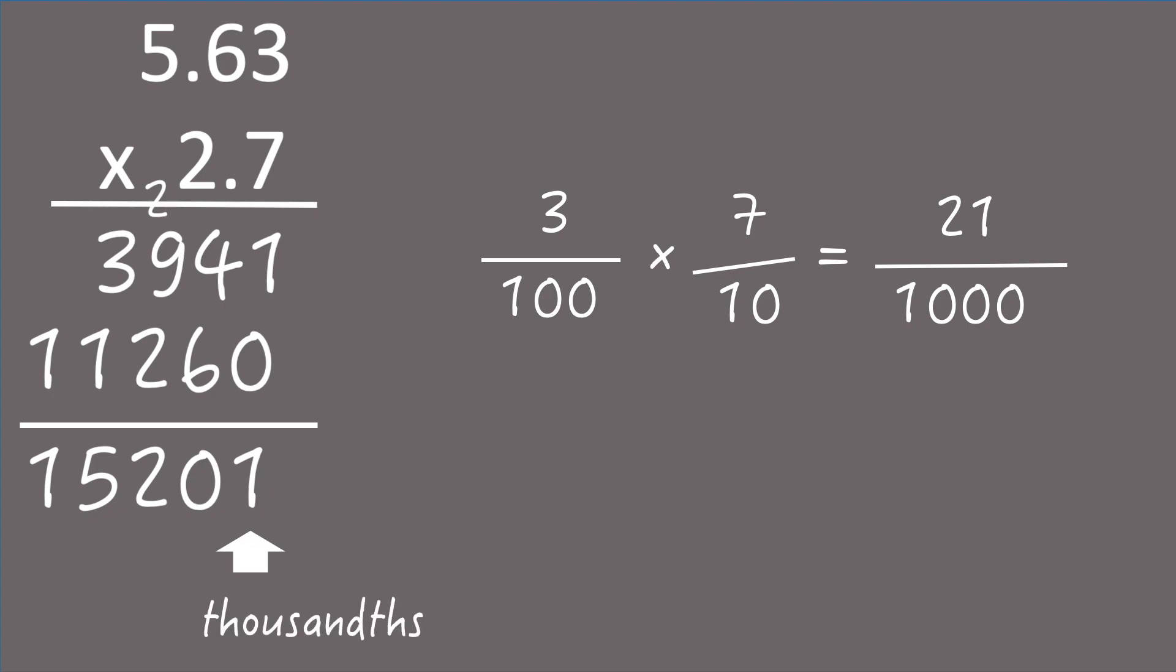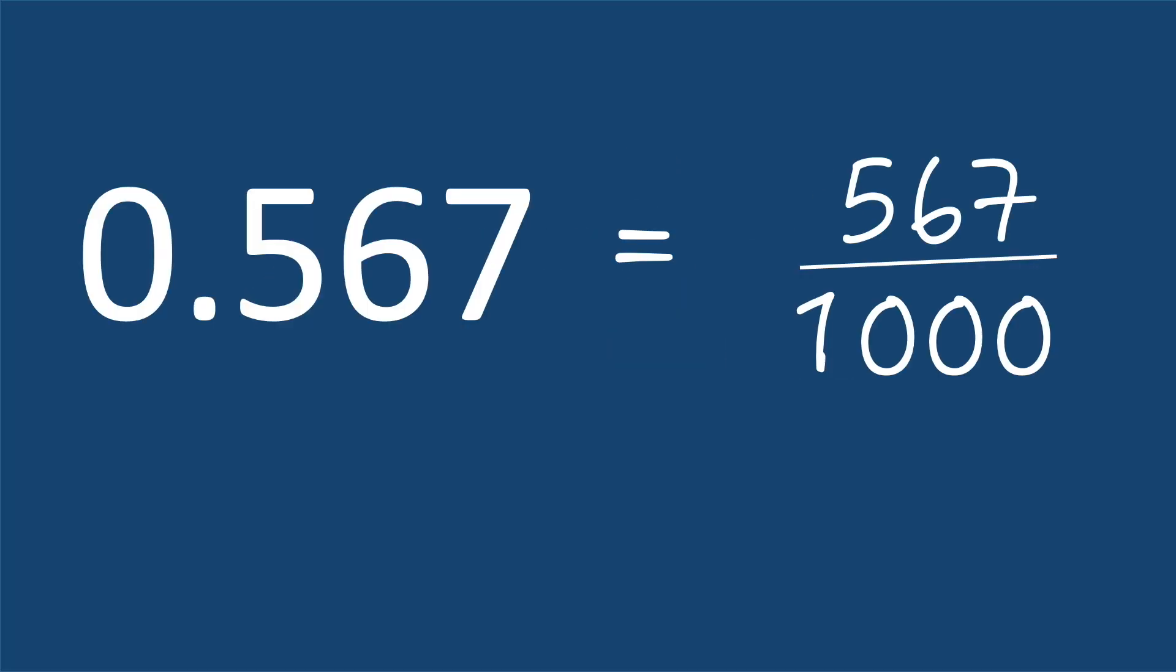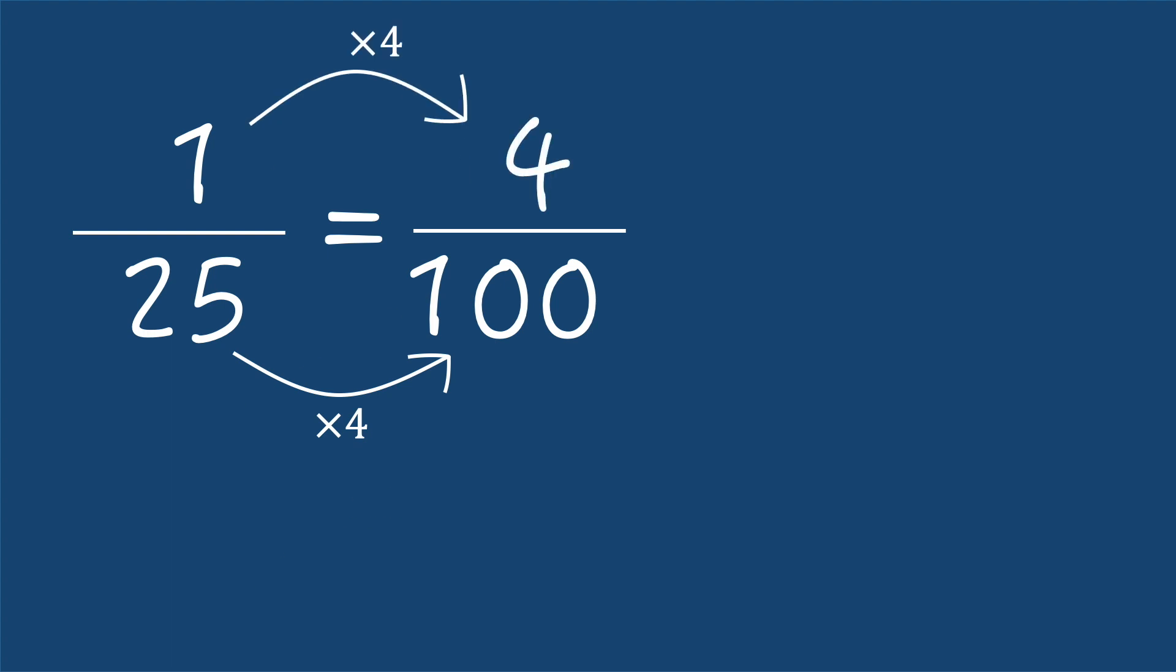We can forget sometimes that decimals often represent fractional components: tenths, hundredths, thousandths. And thinking in this way can help us see the connection between some fractions and their decimal representation. Why two-tenths is the same as a fifth. Why one twenty-fifth is the same as four-hundredths.